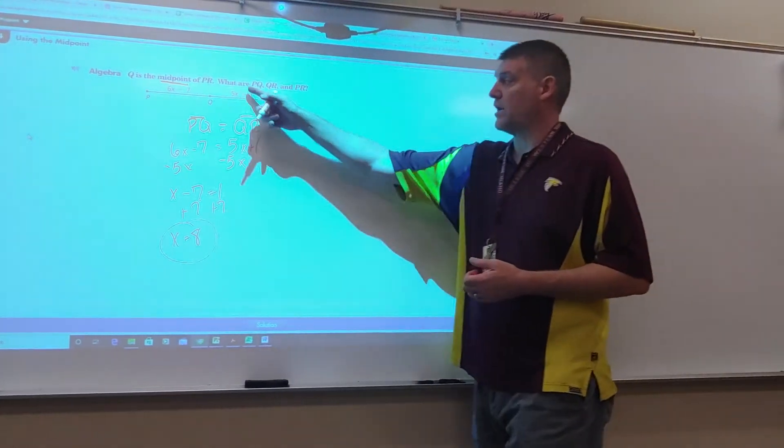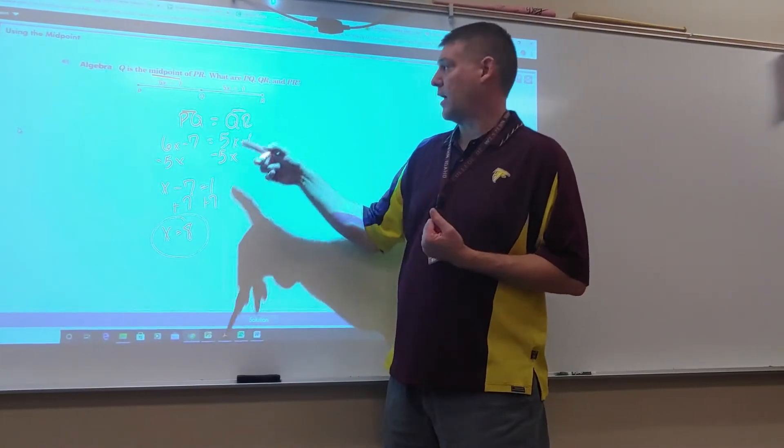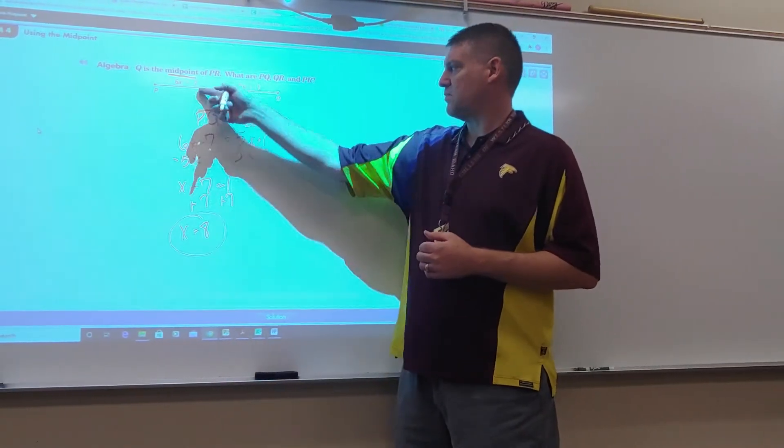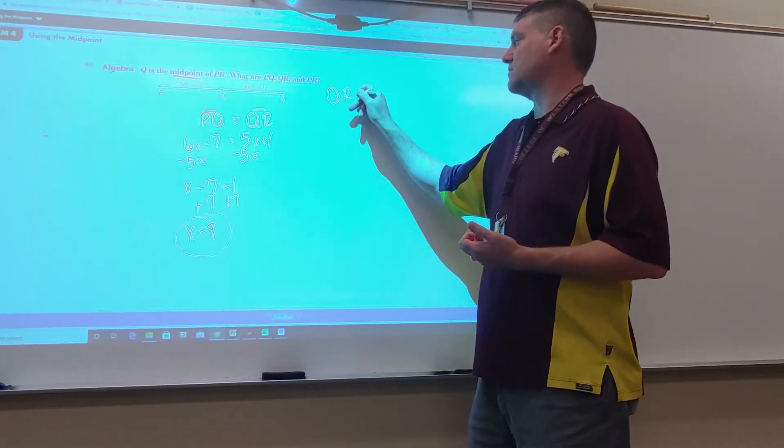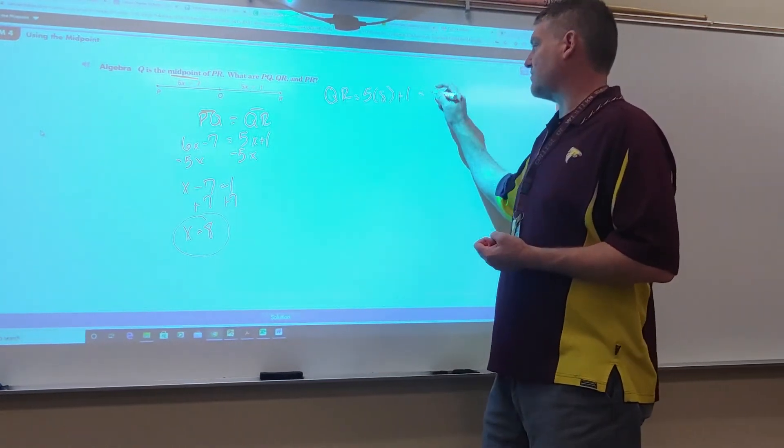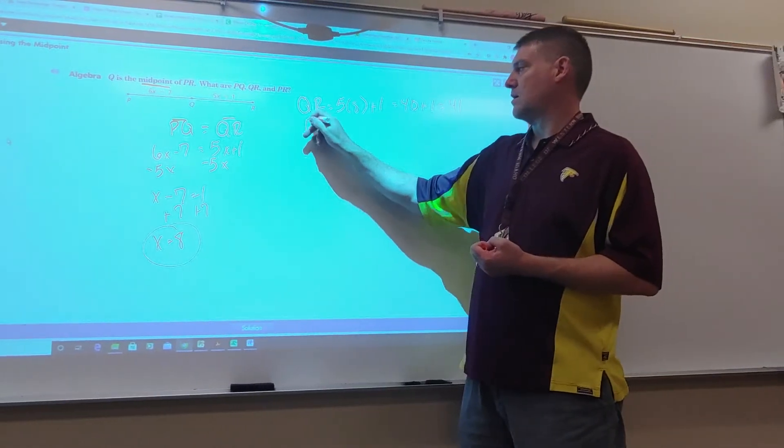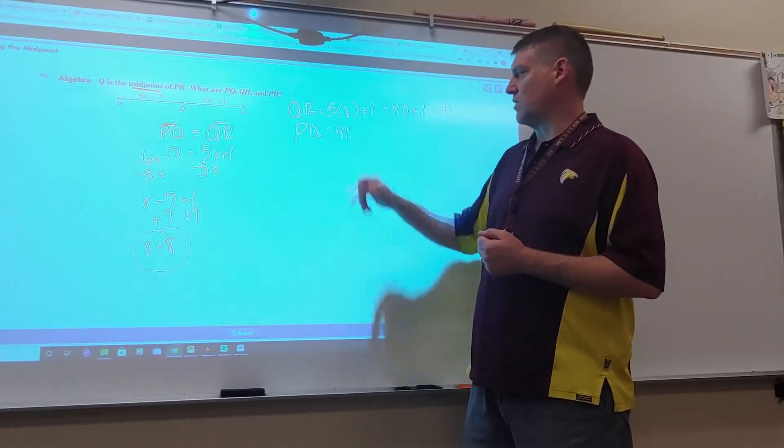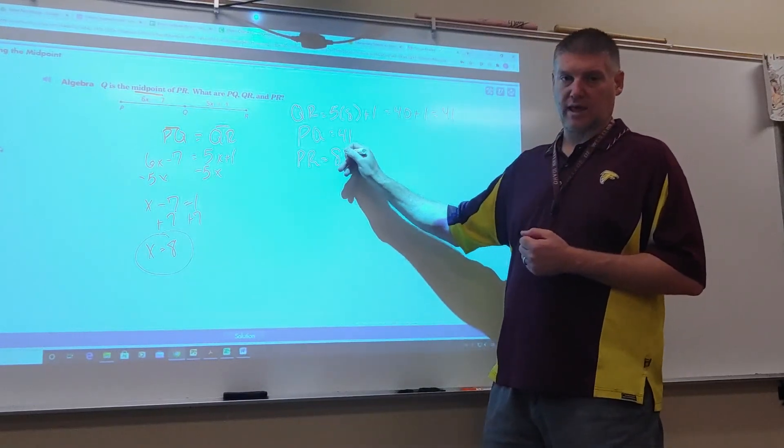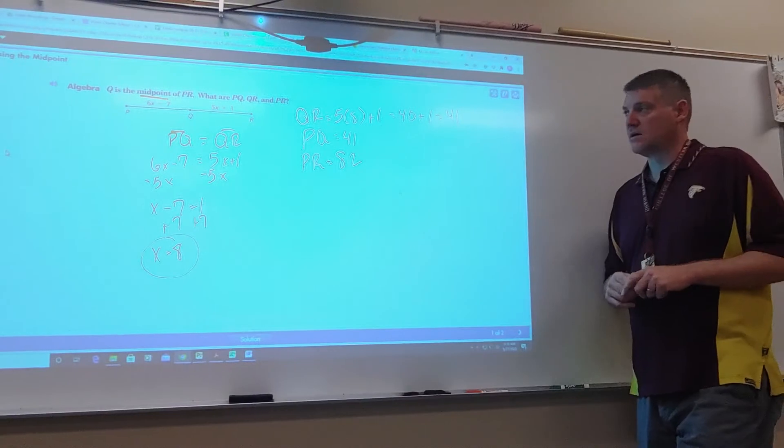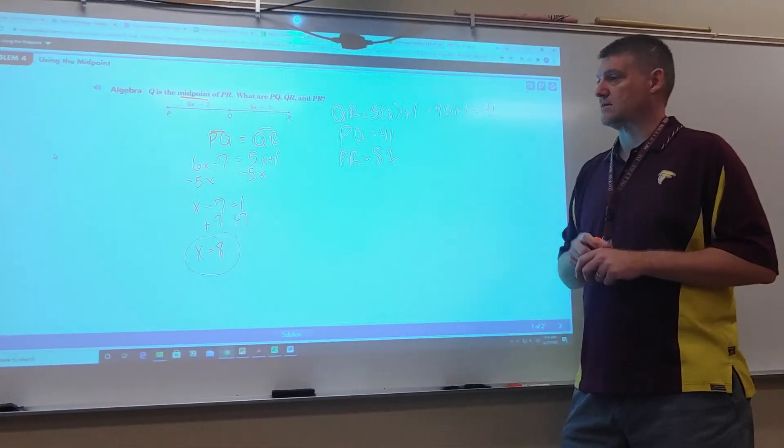If I know PQ, I already know QR, right? And PR is just double that. I'm going to take this 8 and plug it in to whichever one's easier. Multiplying by 5 and adding 1 is probably easier, so I'm going to find QR first. 5 times 8 plus 1. 5 times 8 is 40, plus 1 is 41. So if QR is 41, PQ has to be the same, which is 41. And then PR has to be the addition of these, or 82. That's using the midpoint to find a value and find the numeric length of PQ, QR, and PR.